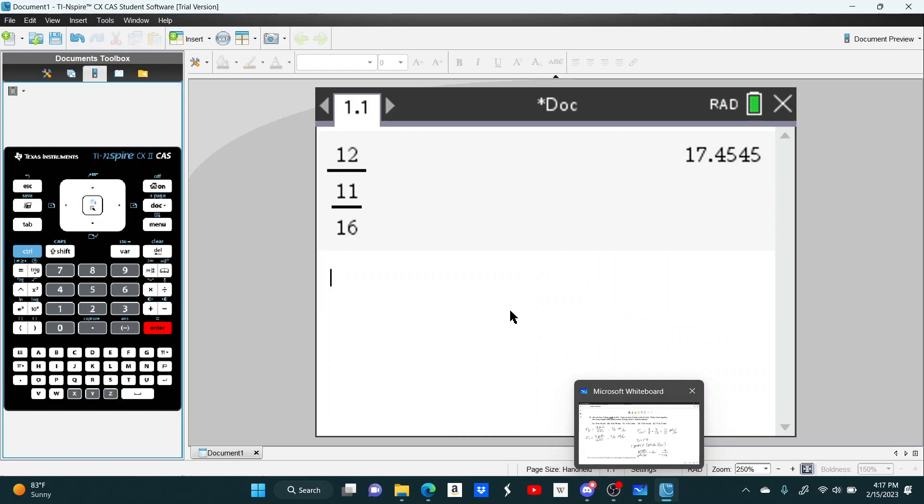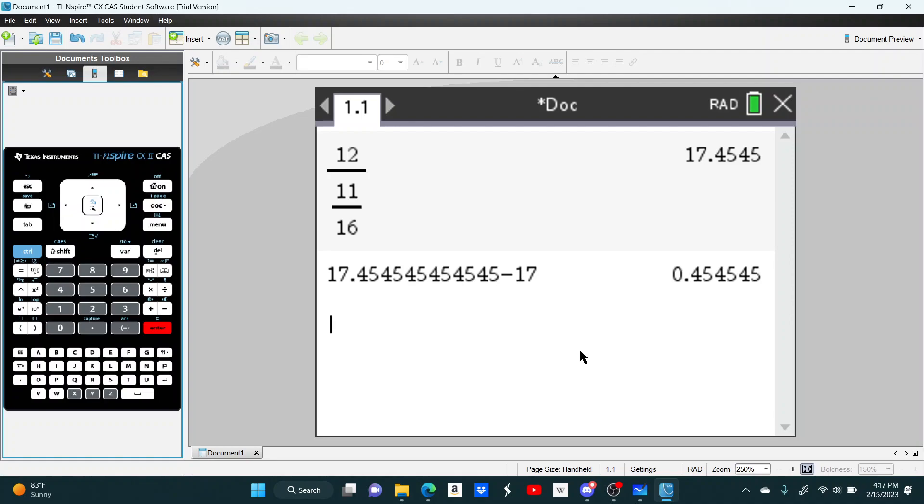So 17.45 hours. We know it's going to be 17 hours and some number of minutes. So the way we find the minutes is, well, how many minutes is in .4545 hours? We just take this, and since there's 60 minutes in an hour, we multiply this by 60. So it'll be 17 hours and 27 minutes.